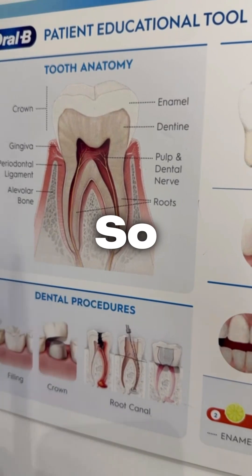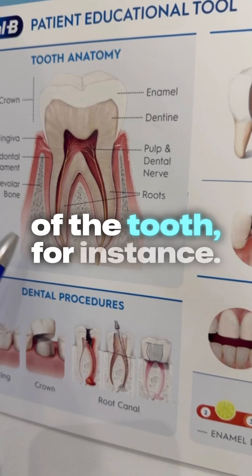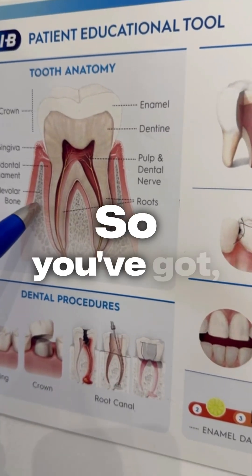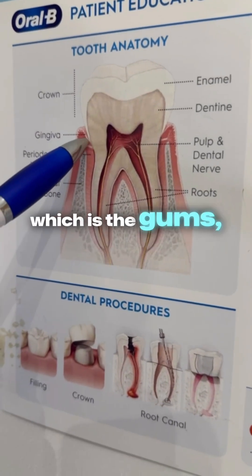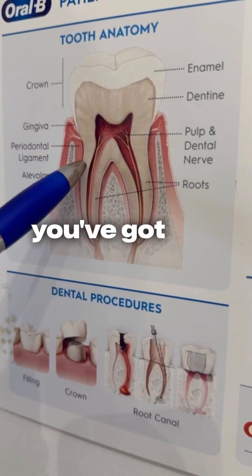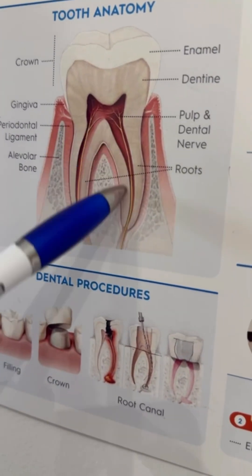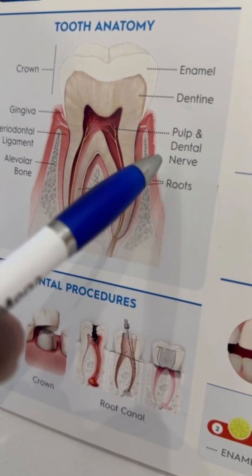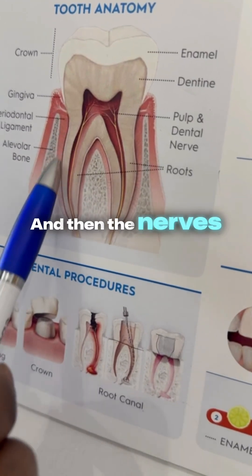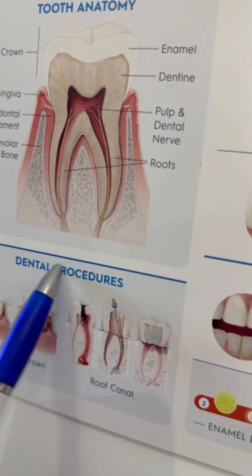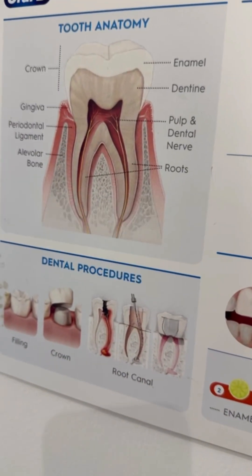So this is a cross-section — a vertical section of the tooth. You've got the bone, then you've got the gingiva which is the gums, then you've got the dentine, then the pulp, a bit more dentine, and then the bone. The nerves are connected to bigger nerves that obviously lead to the brain.